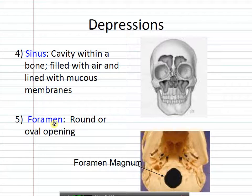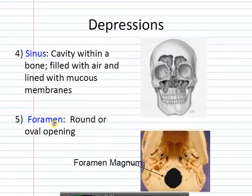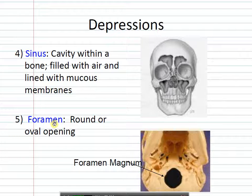The next one is a foramen, and a foramen means a hole. The foramen magnum — 'magnum' means big — is the big hole in the bottom of the skull. So when you're looking for something that's a big hole, that's an obvious one that stands right out. Foramen is going to pop up a lot, so it's a word you should definitely get used to.